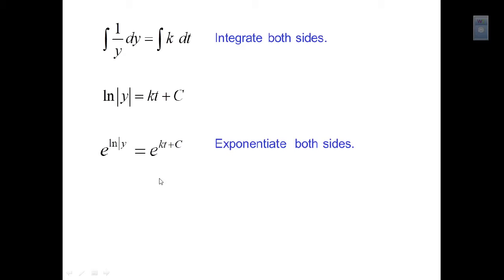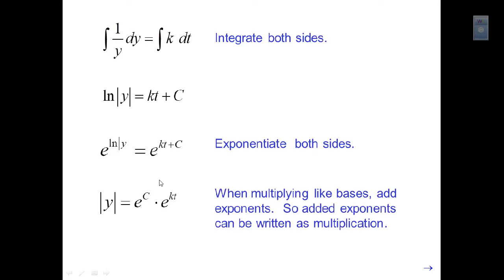We want to solve for y explicitly. We exponentiate both sides to cancel out the natural log. We get e to the natural log of the absolute value of y — the absolute value is there because we can only take the natural log of positive values; we cannot take the natural log of zero or a negative number. On the other side, e to the natural log of y simplifies, leaving us with just the absolute value of y equals e to the c times e to the kt.